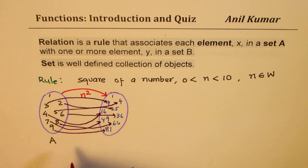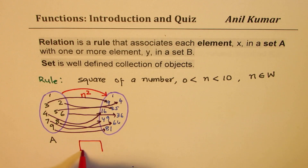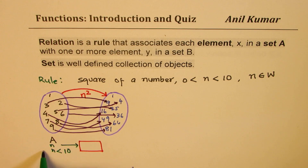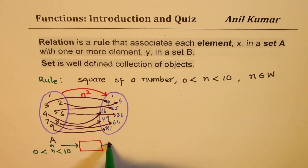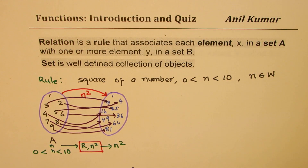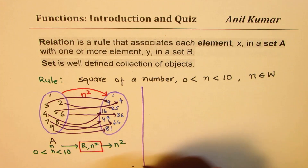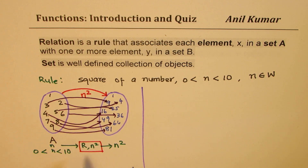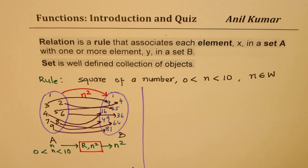We can also represent this relation with an input-output box. The input is a natural number where n is between 0 and 10, and the output is n². The relation R is defined as n squared. This is another way to display the relationship, relating sets A and B with the rule 'square of the number.'